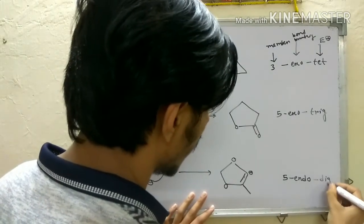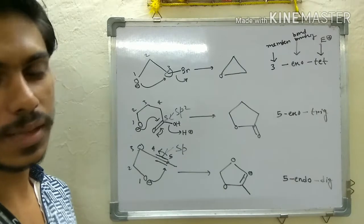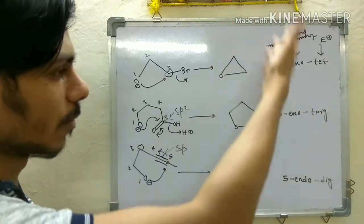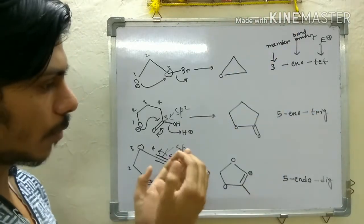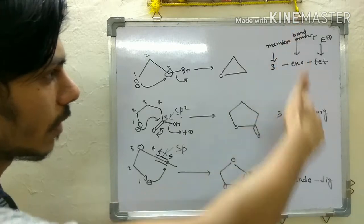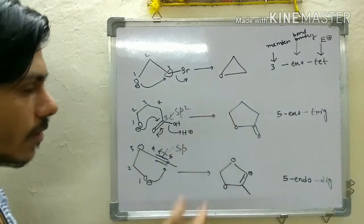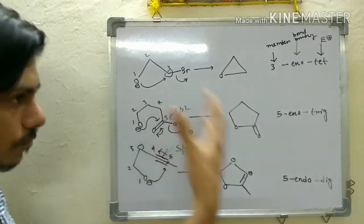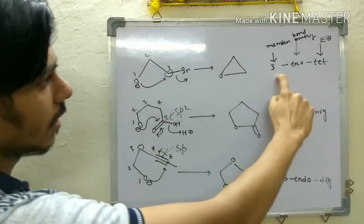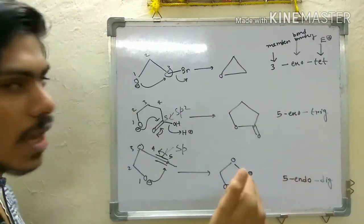You might ask why we need this nomenclature. It is not a luxury — when we make a table of which reactions are favorable and which are not, this nomenclature becomes very helpful. So: the first example is three exo tet, the second is five exo trig, and the third is five endo dig. Exo or endo tells us whether the breaking bond is inside or outside the ring.